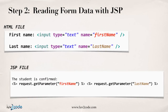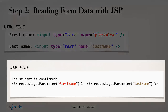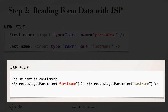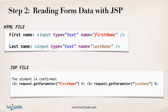Here's the coding for reading the form data. Whenever we read form data with JSP, it's very important that we know the names of those HTML form fields. In the JSP file, we simply want to say the student is confirmed, and then display the student's first name and last name. We read the form data by saying request.getParameter and giving that form field name — firstName. Then to read the last name, we do a similar thing: request.getParameter, lastName. We place all that inside of a JSP expression with the angle bracket percent with the equal symbol. That will allow us to read the form data in JSP.